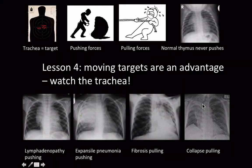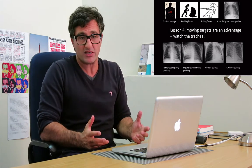The lesson is to use the trachea and the heart as reference points, knowing they can be displaced by pulling or pushing forces. Recognizing that they are moving targets helps you make the diagnosis of a mass, a collapse, or fibrosis.